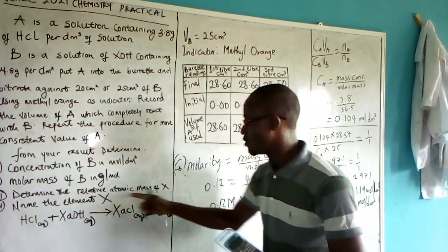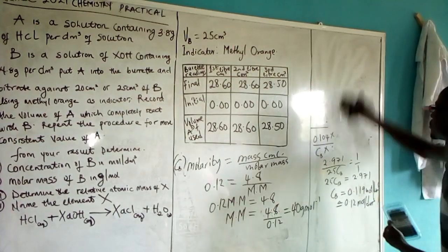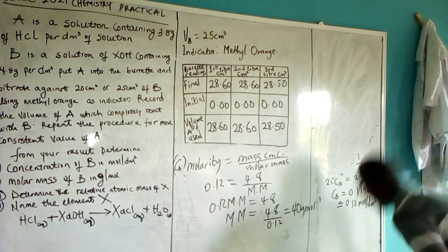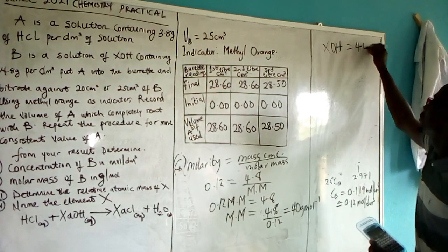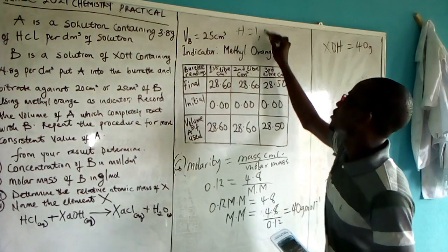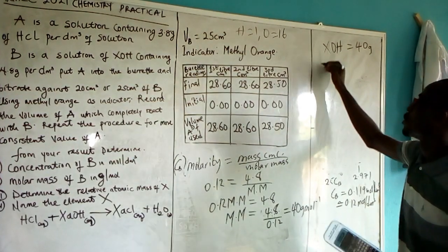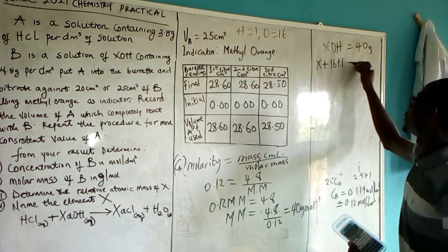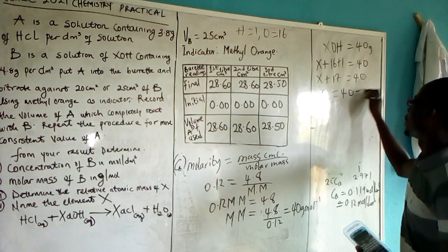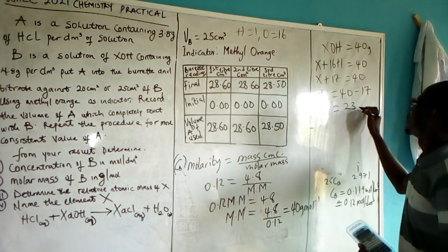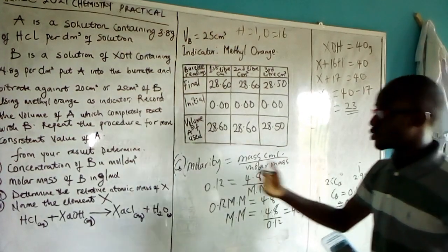We are asked to determine the relative atomic mass of X. The compound is XOH and its molar mass is 40 g/mol. Since O = 16 and H = 1, we have: X + 16 + 1 = 40, so X + 17 = 40, giving X = 23. The relative atomic mass of X is 23 (no units).